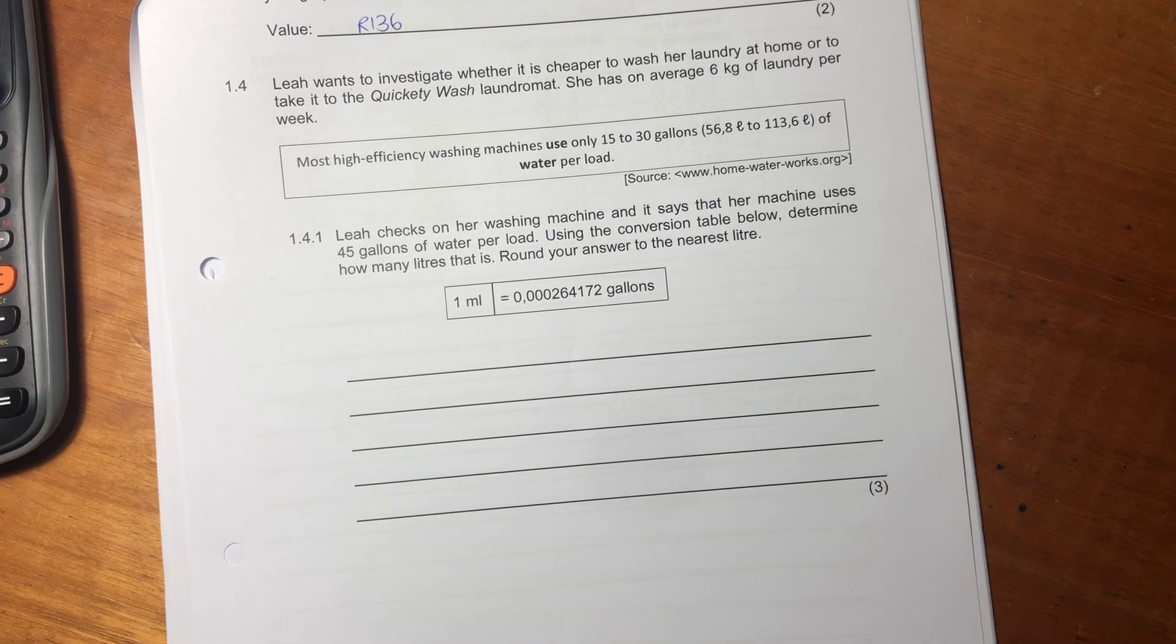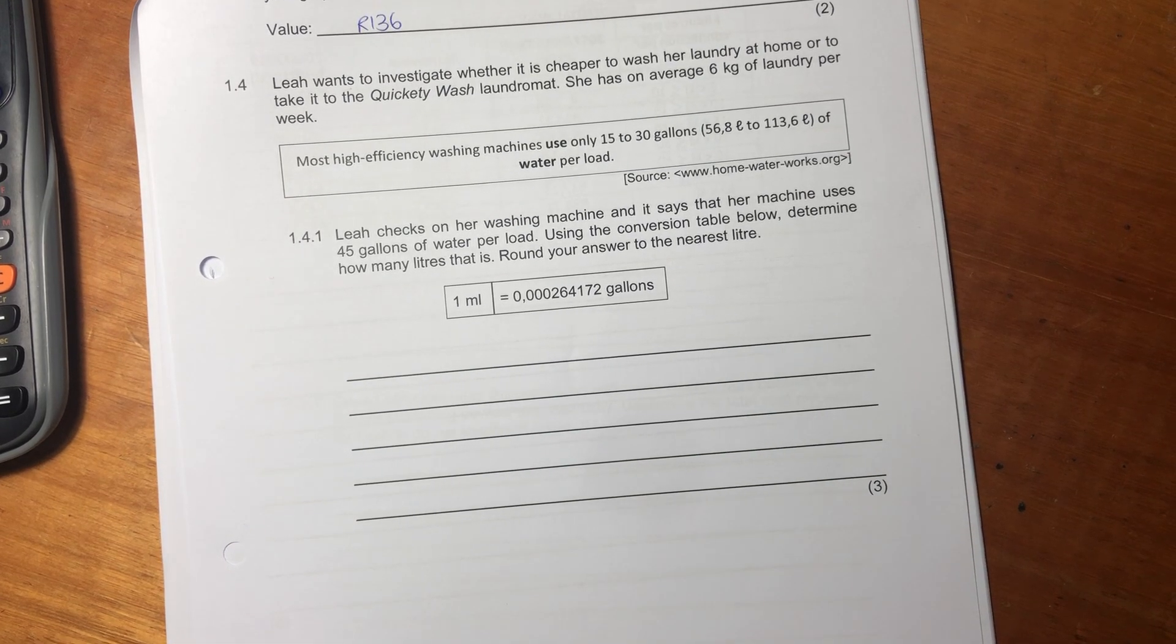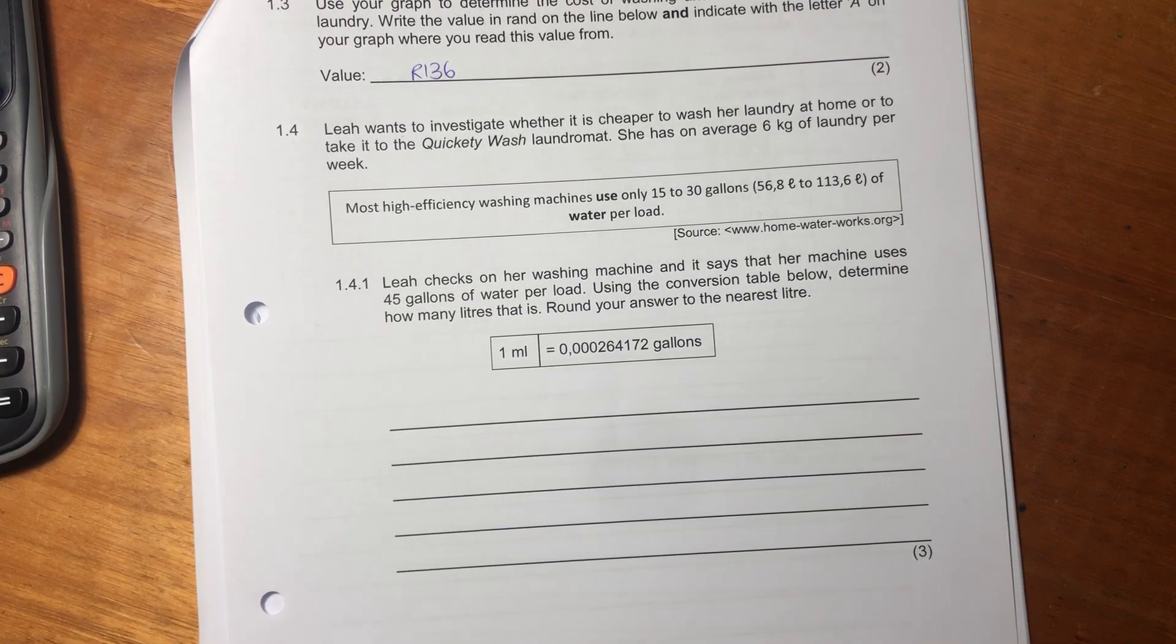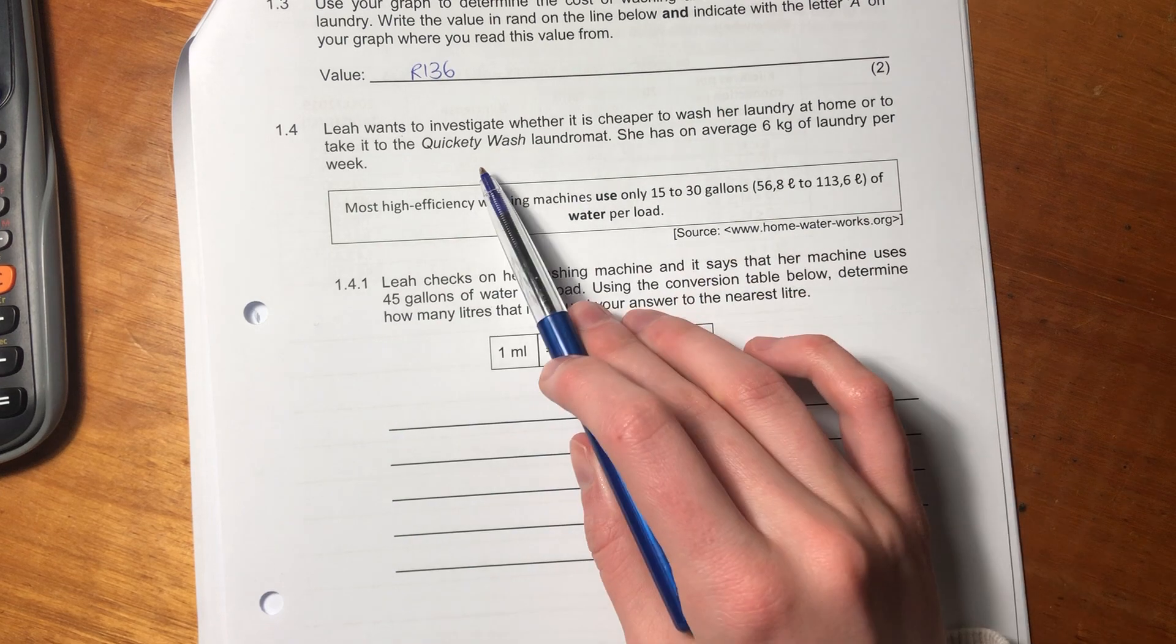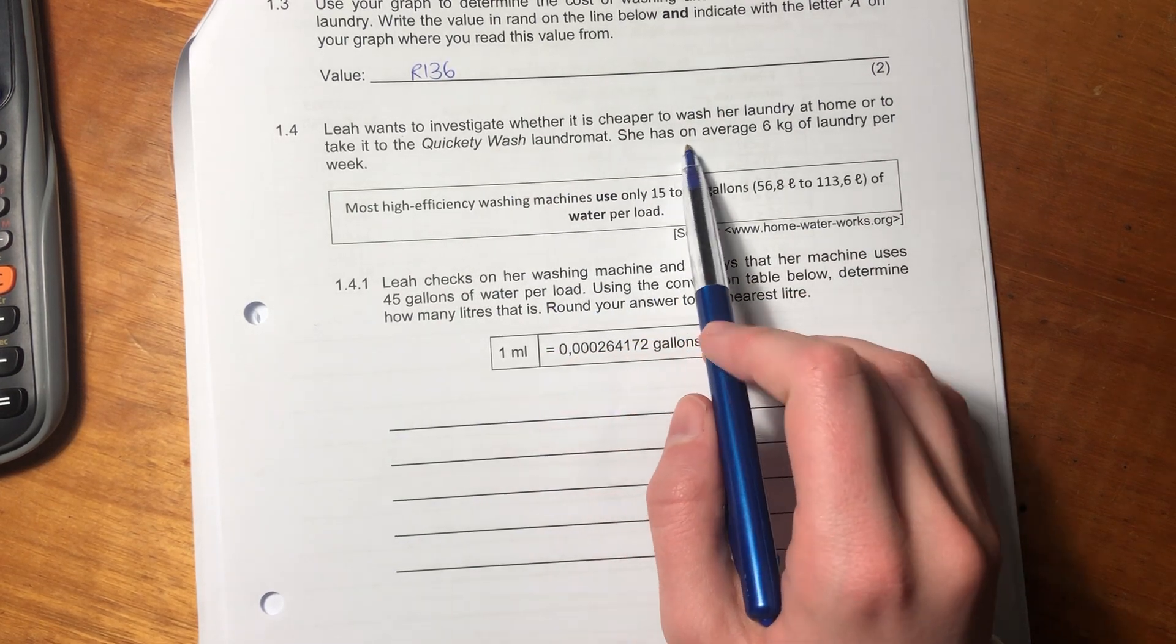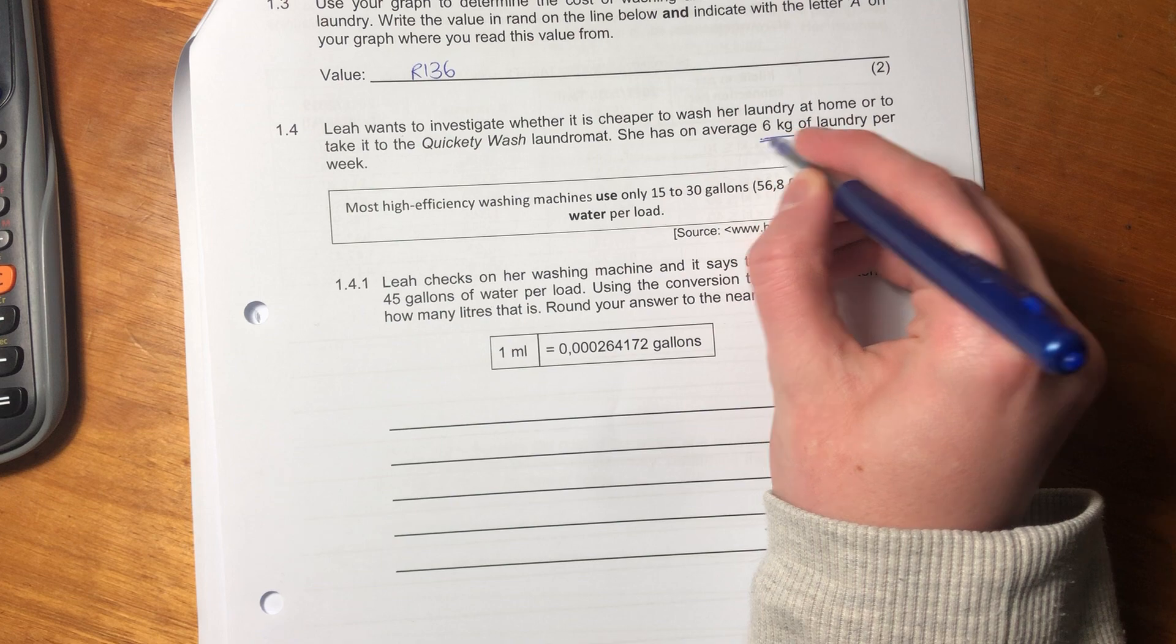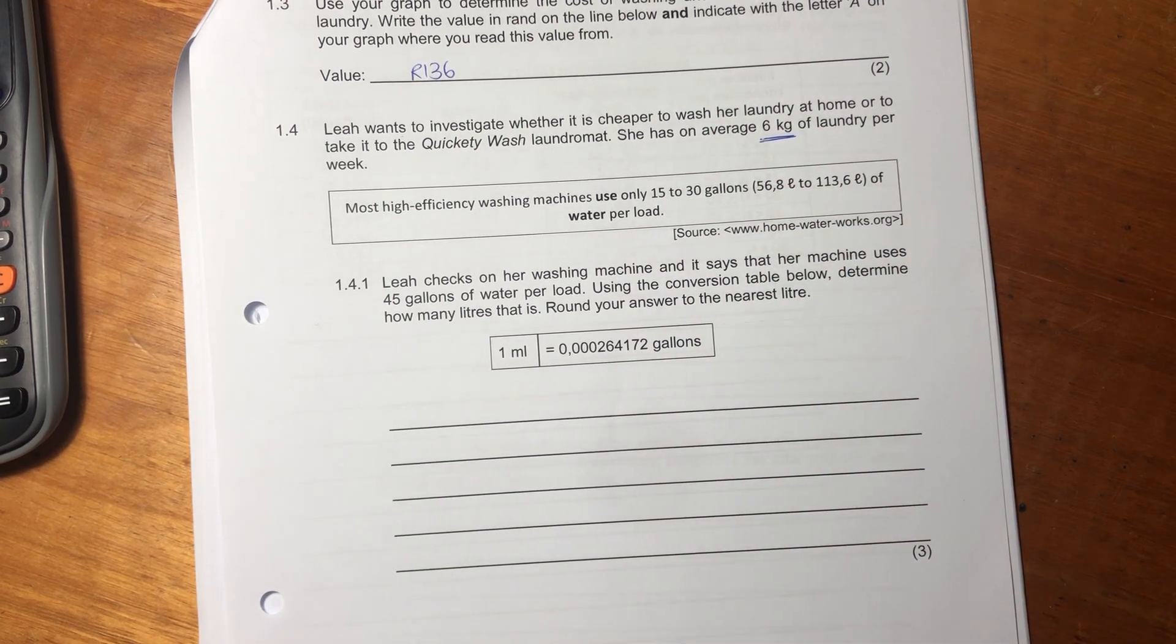Okay guys, we're going to do 1.4 now. It says Leah wants to investigate whether it is cheaper to wash her laundry at home or to take it to Quickity Wash Laundry Mat. She has an average of 6 kgs of laundry per week.